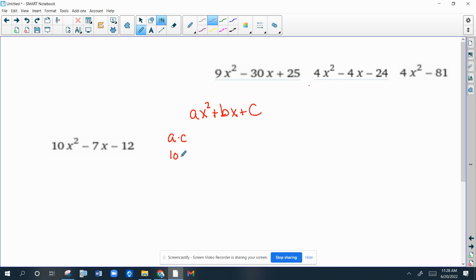So it's called the a times c method. So 10 times a negative 12. And you find factors of that add up to the middle term, which is a negative 7. And after you think about it for a while, maybe take out your calculator or just all the possibilities, negative 15 times 8 is negative 120. And negative 15 plus 8 is negative 7. So that will work. They do have to add up to the middle term. But now you can't just write x minus 15, x plus 8, like you did the last one.